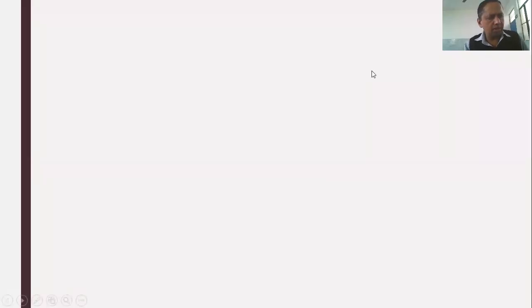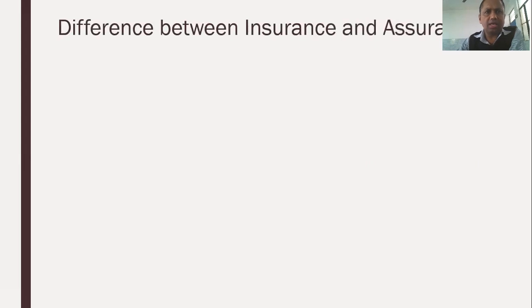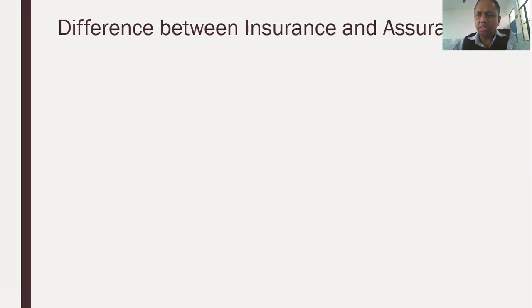We are starting the next topic: insurance and assurance. Insurance and assurance are two different words with different meanings. Generally, these terms are considered to be the same thing, but they are not synonyms. Assurance refers to a contract in which the sum assured is bound to be paid sooner or later. In the case of insurance, the sum assured is paid only when the insured suffers a specific loss in the policy. This is the main difference.